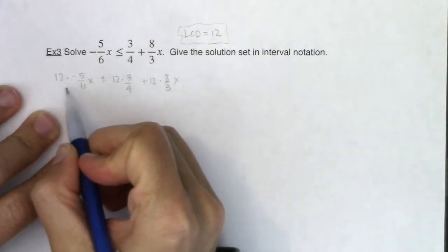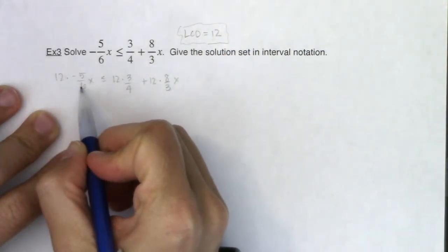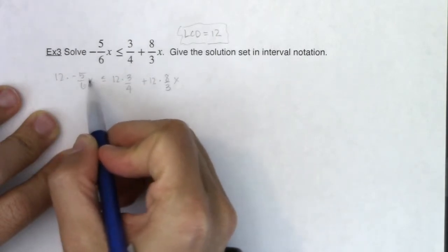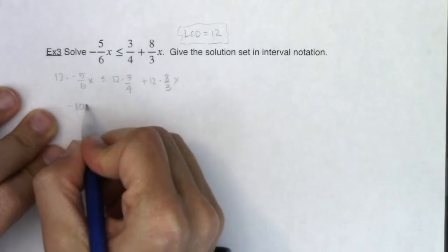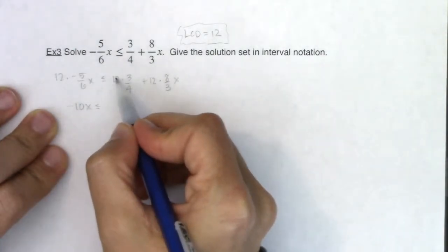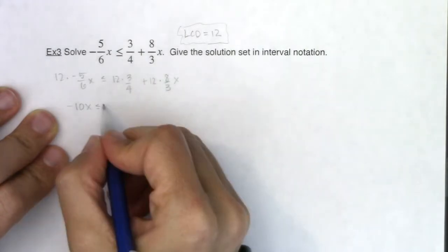All right, so let's see what we have. 12 divided by 6 is 2. 2 times negative 5 is negative 10, negative 10x. All right, less than or equal to. 4 goes into 12 three times, 3 times 3 is 9.